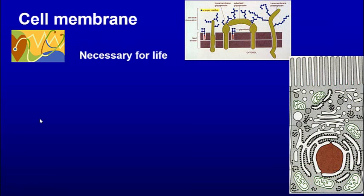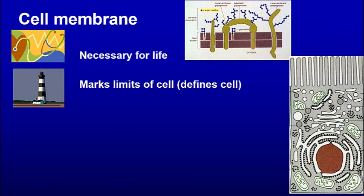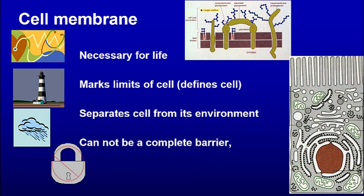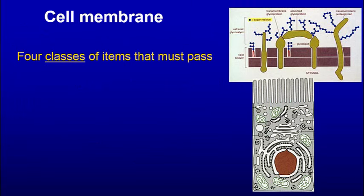A cell membrane is necessary for life. It marks the limit of the cell — it defines the cell. What's on the outside of the cell membrane is outside the cell. It also separates the cell from its environment. However, it cannot lock out all things; some things must pass through the membrane. So you have the cell membrane that marks the limit of the cell, but it has to allow some things to go inside.